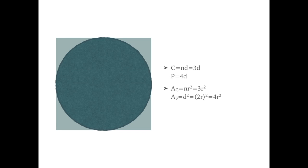The circumference of the circle is 3 times the diameter, while the perimeter of the square is 4 times the diameter. The area of the circle is 3 times the radius squared, while the area of the square is 4 times the radius squared.